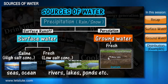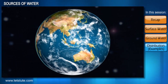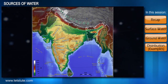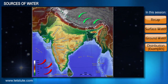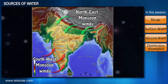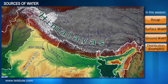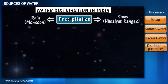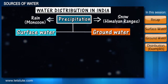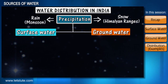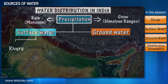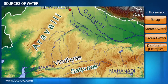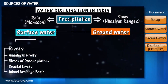Let's see how precipitation — that is rainwater or snow, the main source of water for the whole earth — is allocated or distributed. Taking the example of India: India receives precipitation in the form of rainfall from the monsoon winds and snow from the Himalayan mountain ranges. This rain and snow is finally available to us in the form of surface and groundwater. Surface water sources in India include a large network of rivers — Himalayan rivers, rivers of the Deccan plateau, coastal rivers, and inland drainage basins — all of which are sources of freshwater.